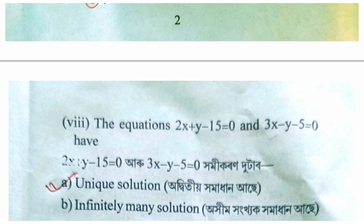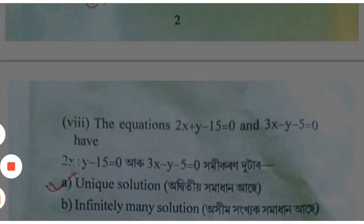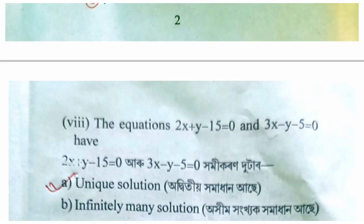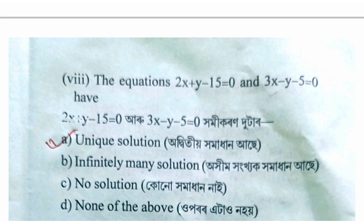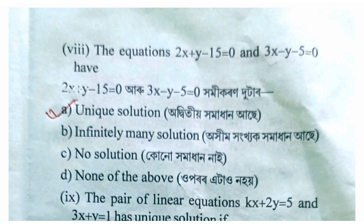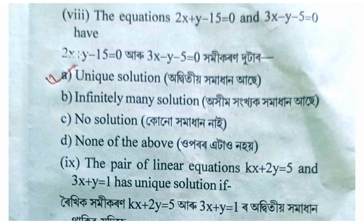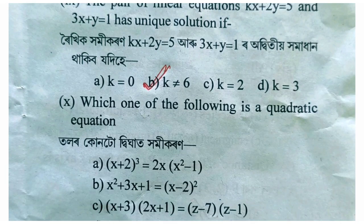2x minus y minus 15 equal 0 or 3x minus y minus 5 equal 0. Since a1/a2 equals 2/3 and b1/b2 equals 1/(minus 1), and a1/a2 does not equal b1/b2, therefore the pair of equations has a unique solution.